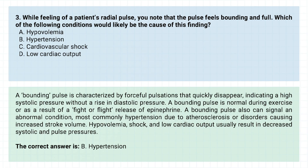A bounding pulse is characterized by forceful pulsations that quickly disappear, indicating a high systolic pressure without a rise in diastolic pressure. A bounding pulse is normal during exercise or as a result of a fight-or-flight release of epinephrine. A bounding pulse can also signal an abnormal condition, most commonly hypertension due to atherosclerosis or disorders causing increased stroke volume. Hypovolemia, shock, and low cardiac output usually result in decreased systolic and pulse pressures.